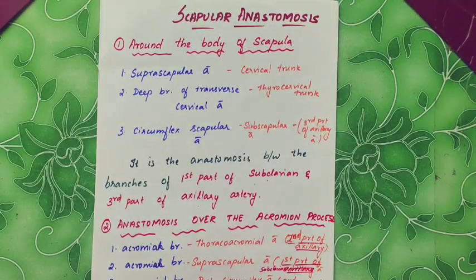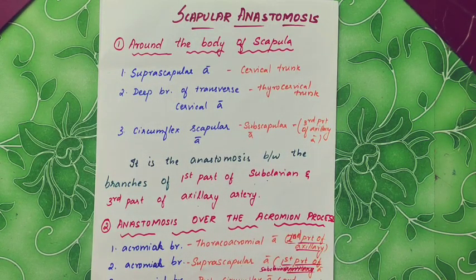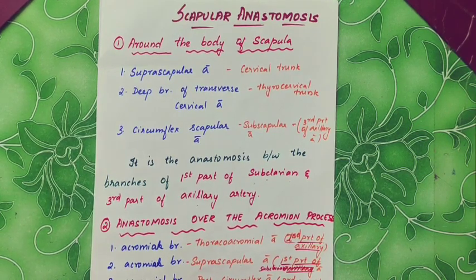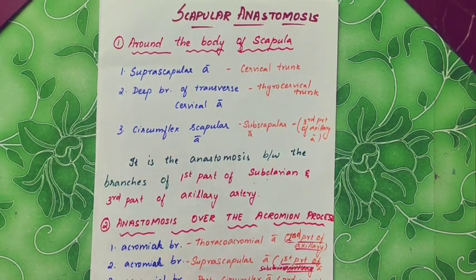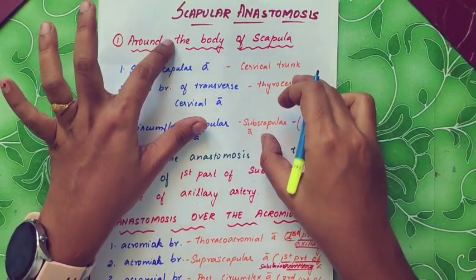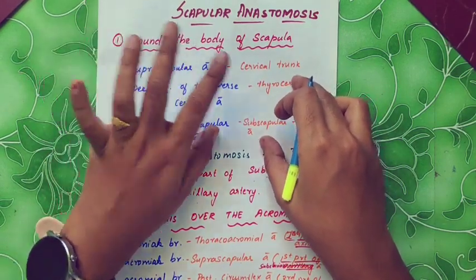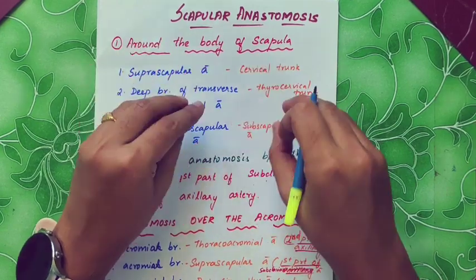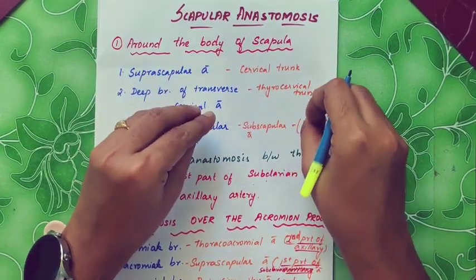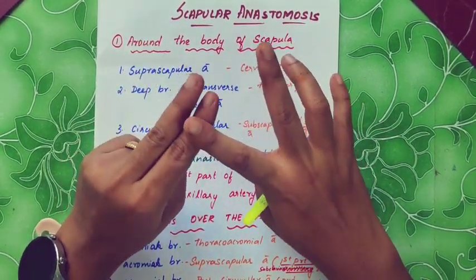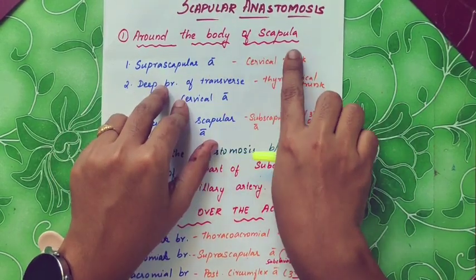Hello and welcome back to my channel. We will talk about scapular anastomosis. Anastomosis is the meeting up of two or more arteries. It is called scapular anastomosis, and it is one of the important five-mark questions. We can talk about anastomosis around the body of the scapula.